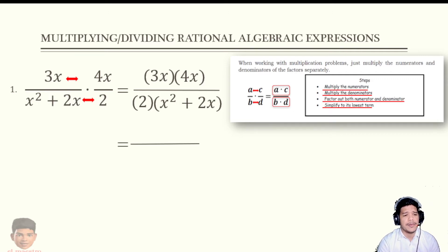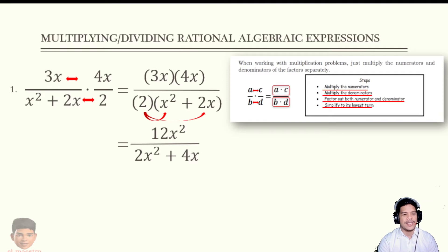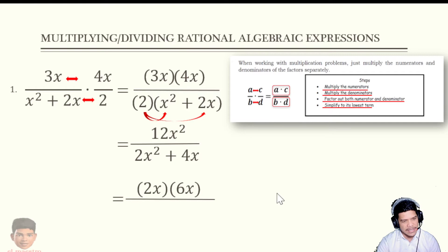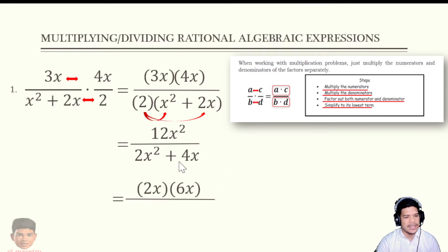Multiplying 3x times 4x gives 12x squared. For the denominator, we use the distributive property: 2 times x squared plus 2 times 2x, giving us 2x squared plus 4x. We also have a separate video on multiplication of algebraic expressions in this channel. Now factor out both numerator and denominator. Factor out 12x squared as 2x times 6x. For the denominator, the greatest common factor is 2x, so we get 2x times (x plus 2).